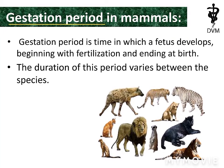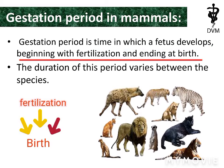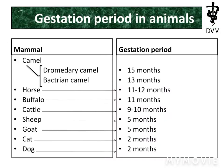What is the gestation period in animals? It is the time in which a fetus develops, beginning with fertilization and ending at birth. The duration of this period varies between species. The gestation periods of different animals are shown in the slide.